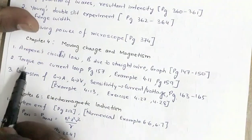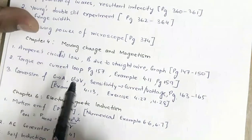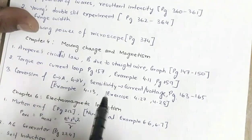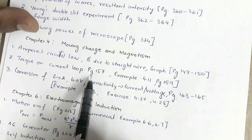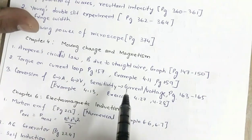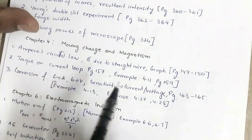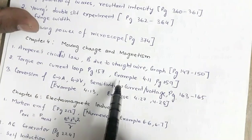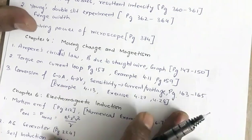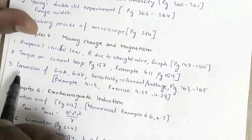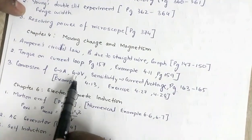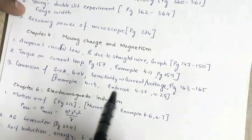Then there is torque on a current loop — a highly important topic — given on page 157. There may be a numerical based on this concept of torque, given in Example 4.11 on page 159. Then the conversion of a galvanometer into an ammeter or galvanometer into a voltmeter.